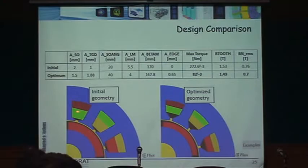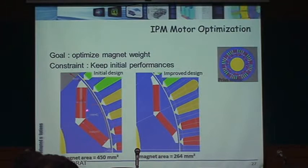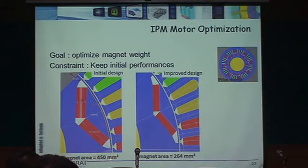Looking at the design comparison, the optimizer shaped the magnet, closed the slots slightly, and widened the teeth to achieve the cogging torque reduction.